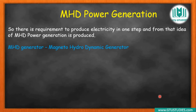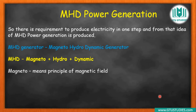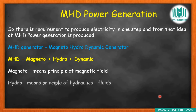The full form of MHD generator is Magneto-Hydro-Dynamic Generator. This name is given because there are three main words: Magneto, Hydro, and Dynamic. Magneto means it works on the principle of a magnetic field. Inside the generator there is a hydraulic fluid, which is provided using a magnetic field.